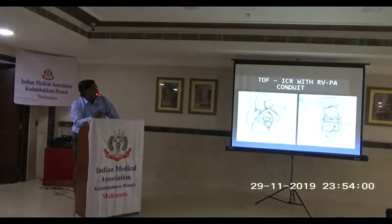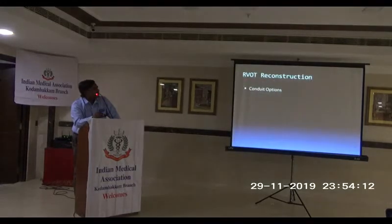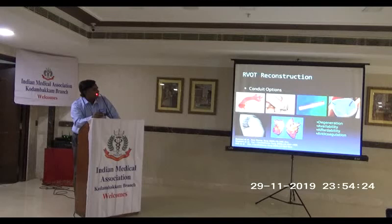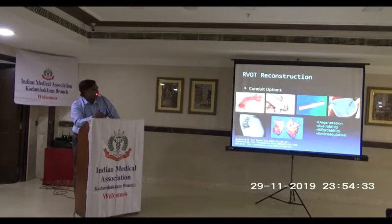This is the worst end of tetralogy where the entire RV-to-pulmonary artery connection is so diminutive that we have to reconstruct the RV-to-PA continuity with a conduit — this is a homograft here. We have different conduit options: homograft, valved conduit, bovine jugular vein, or a conduit with a pericardial valve sutured in the theatre. All conduit materials degenerate over time. Eight to ten years down the line, we end up replacing them — this is not unusual.